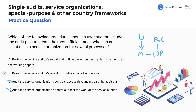Per the AICPA, the user auditor should obtain a sufficient understanding of the services provided and their effect on the user entity's internal control relevant to the audit. That understanding provides a basis for assessing the risks of material misstatement. If sufficient understanding cannot be obtained from the user entity, the auditor should obtain it from other procedures — for example, obtaining and reading a Type 1 or Type 2 SOC report. Final answer: letter B.